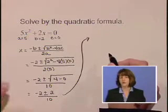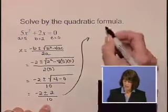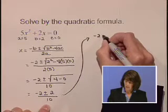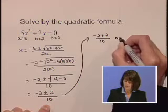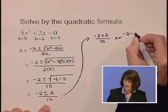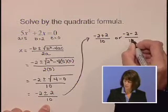So, our two solutions are going to be generated from this statement. They will be negative 2 plus 2 over 10, or negative 2 minus 2 over 10.